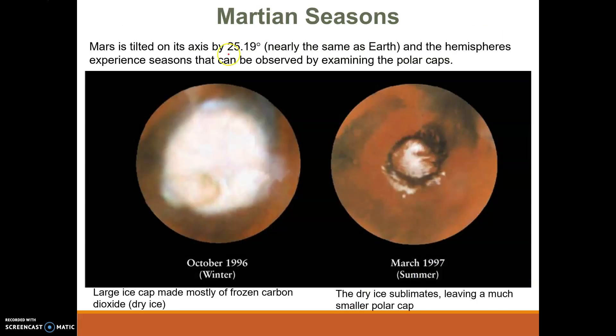Mars is tilted at 25.9 degrees, which is really similar to Earth, and the hemispheres also experience similar seasons. We can look at those seasons by looking at the ice caps. In October, there is a really large ice cap covering it, which would be winter for Mars. But in March, we can see that ice cap sublimate — it's dry ice, frozen carbon dioxide rather than frozen water as on Earth — so it becomes smaller due to the seasonal changes, very similar to Earth.